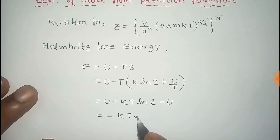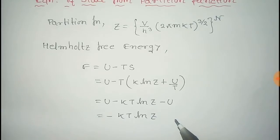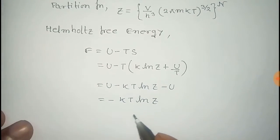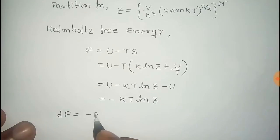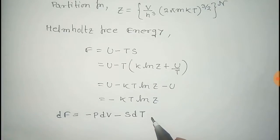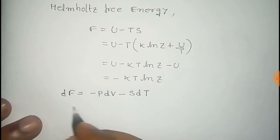This U cancels out, remaining minus kT ln Z. Now from the thermodynamic relations we can write dF equals minus P dV minus S dT. From this, pressure P equals minus partial F partial V at constant temperature.